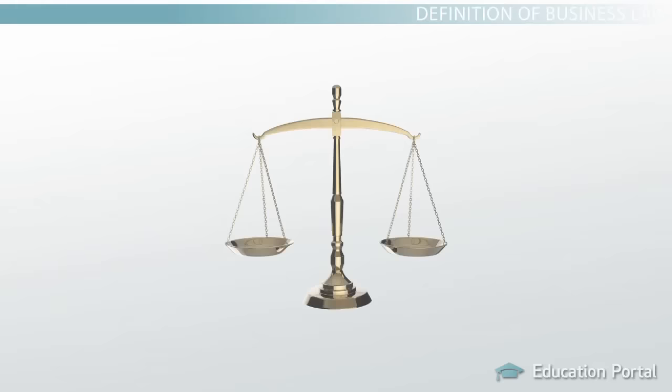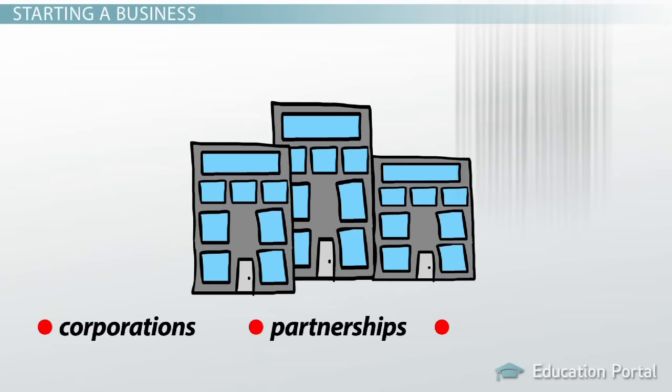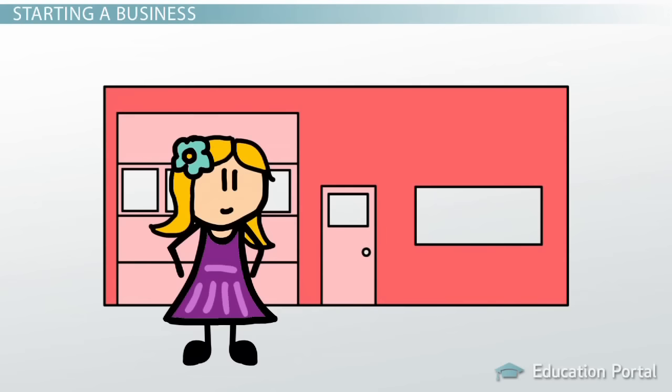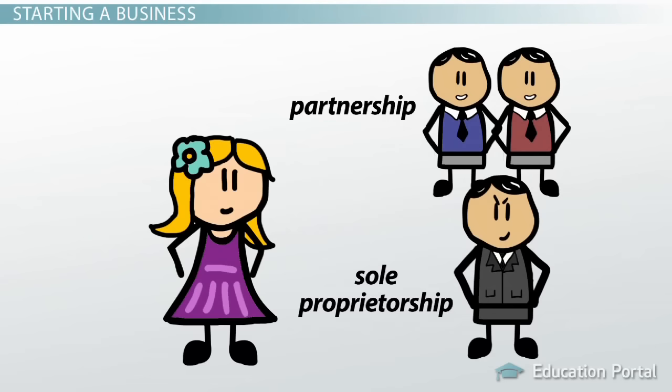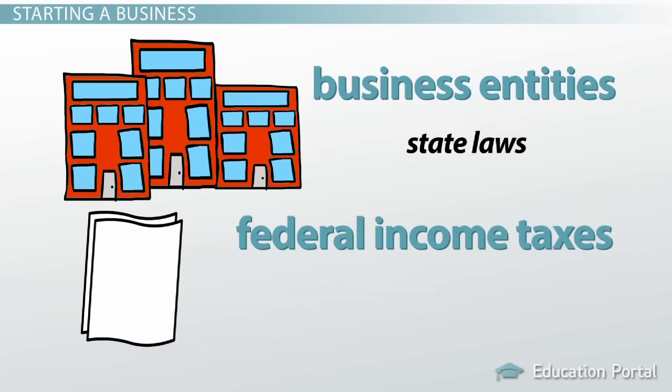Much of business law addresses the different types of business organizations. There are laws regarding how to properly form and run each type. This includes laws about entities such as corporations, partnerships, and limited liability companies. For example, let's say I decide to start my own pet grooming business. I need to decide what type of business I want to be — will this be a partnership, or will it be a sole proprietorship? What papers do I need to file in order to start this business? These questions fall under the laws that govern business entities, which are state laws. The type of entity I pick will also affect how I pay my federal income taxes, which are of course federal laws.